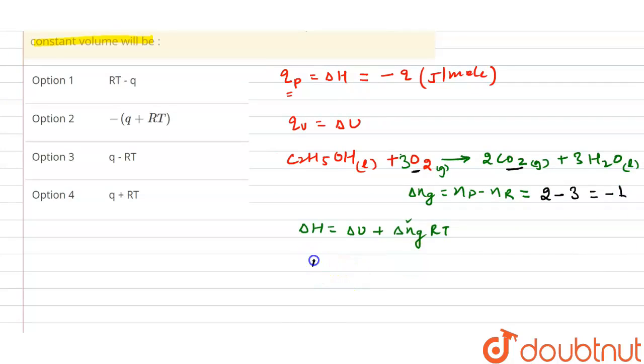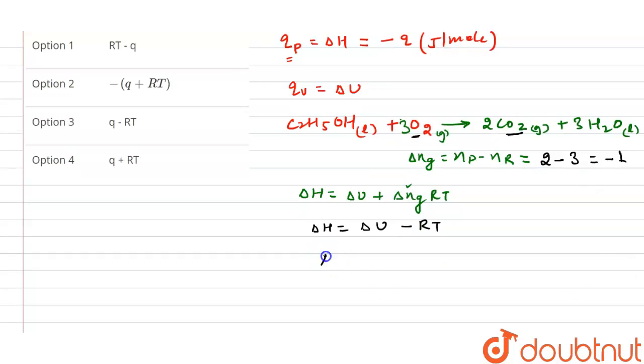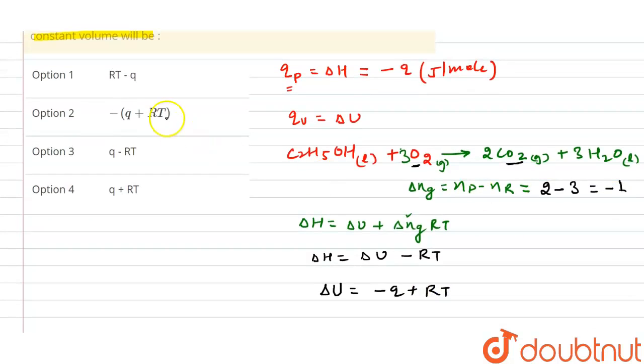Now put that value, minus one. So we can say ΔH equals ΔU minus RT. We have to find the value of ΔU. So that will equal ΔH plus RT. ΔH equals minus q, so it will be minus q plus RT. If you see the options, RT minus q, the first option is the right one.